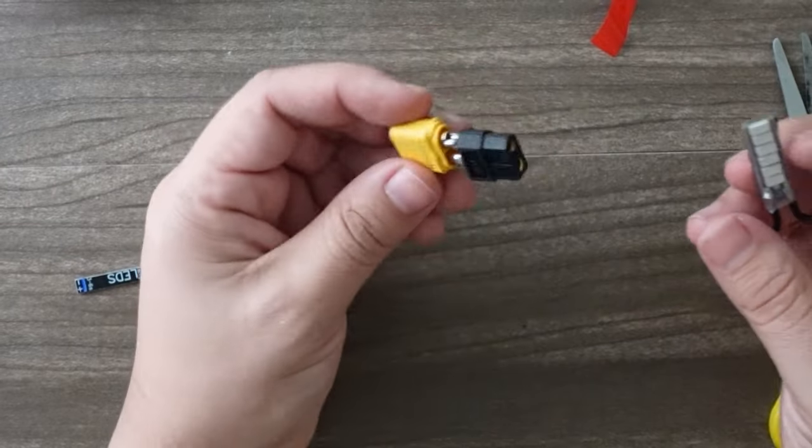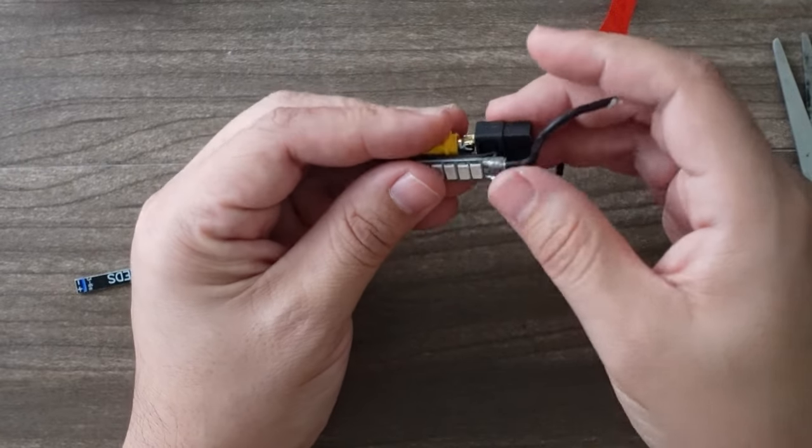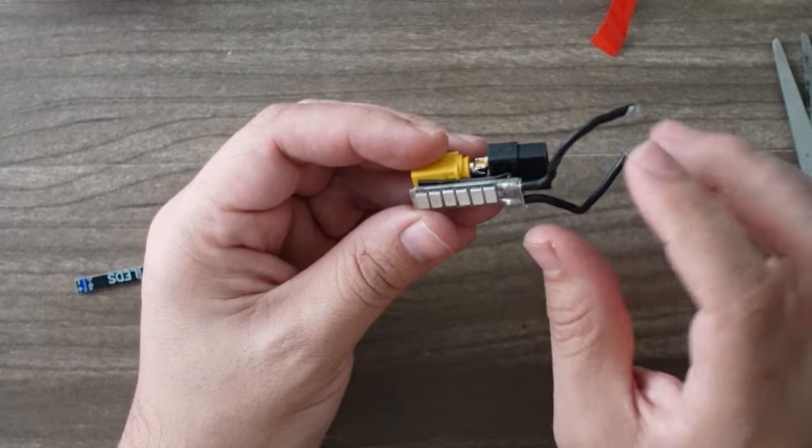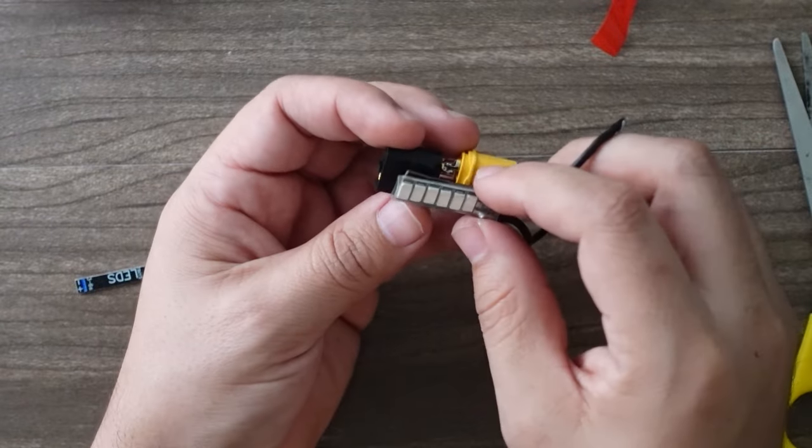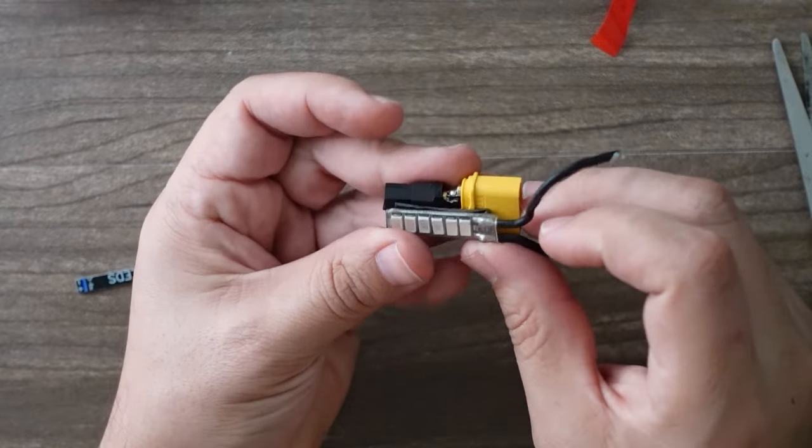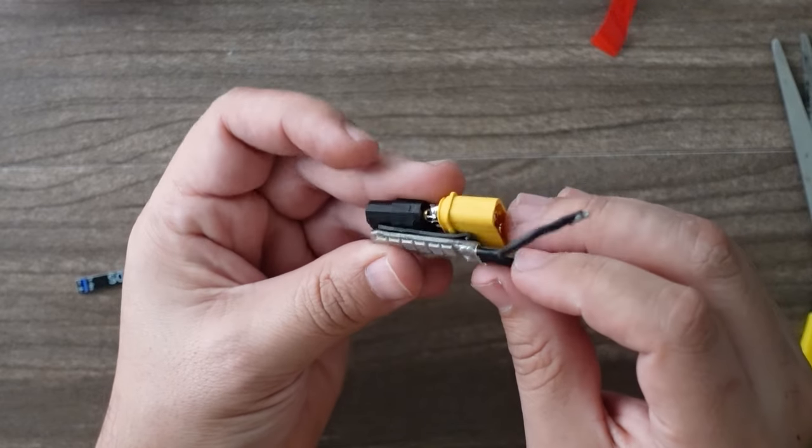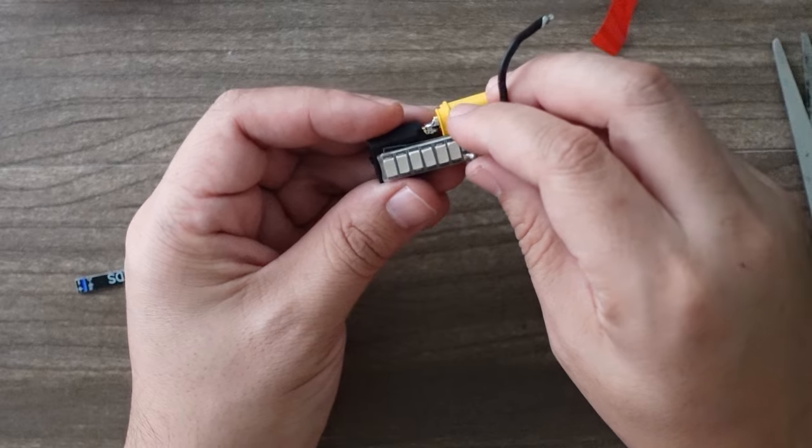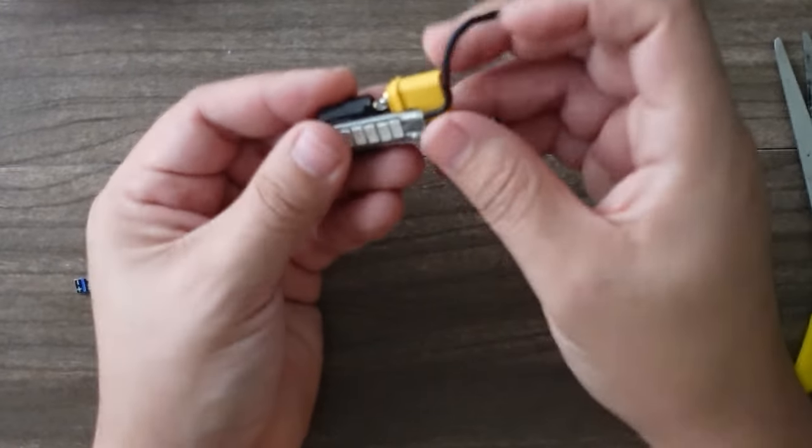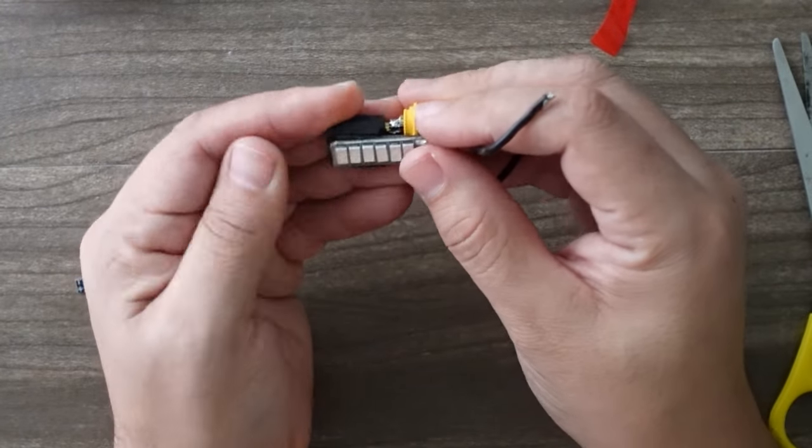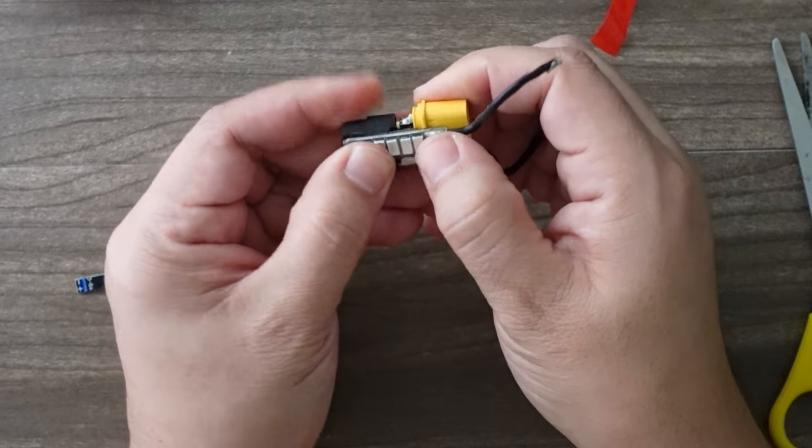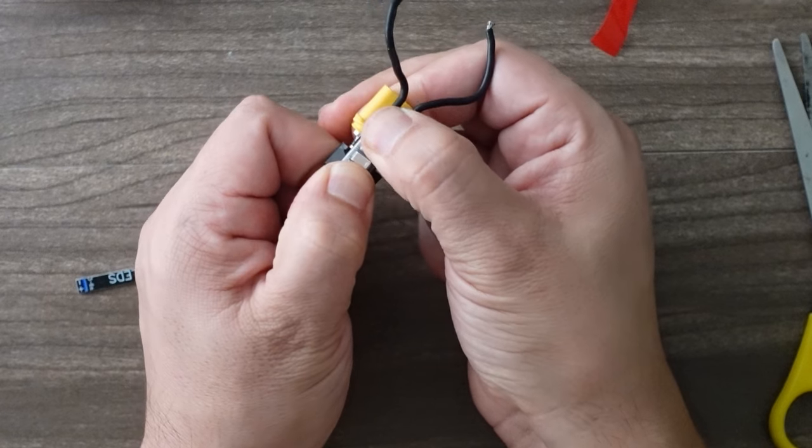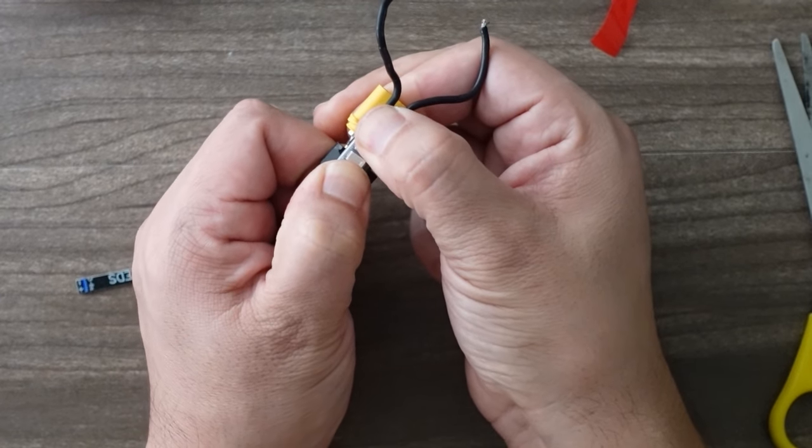We're gonna kind of put it right here on the edge. What you want to do is make sure you have the positive on this side. These LEDs have a positive and negative, make sure you line that up correctly. Try to get it centered as much as possible. To get this to have a really nice strong bond you need to hold it tight for about 60 seconds, so I'm gonna hold this tight for a bit.